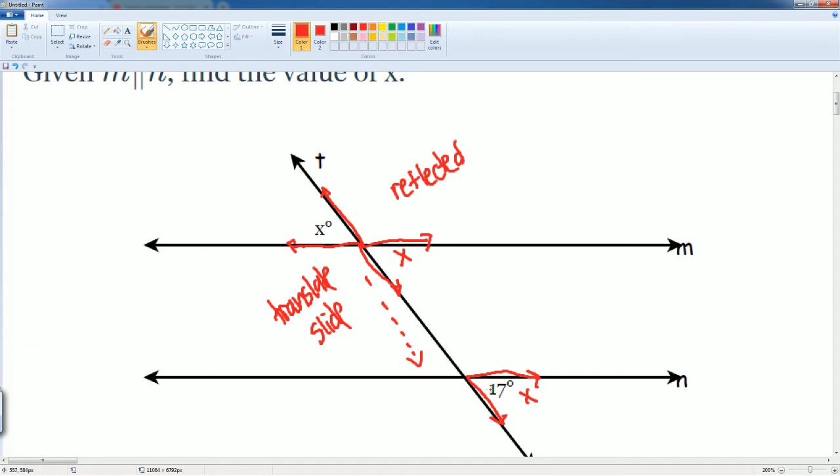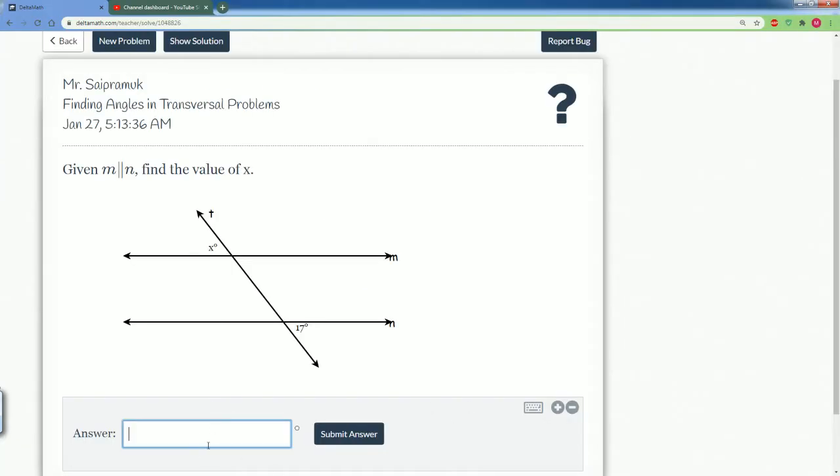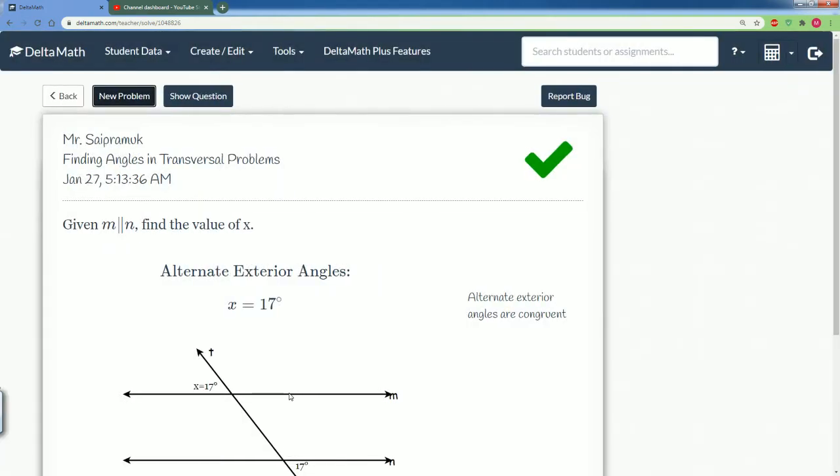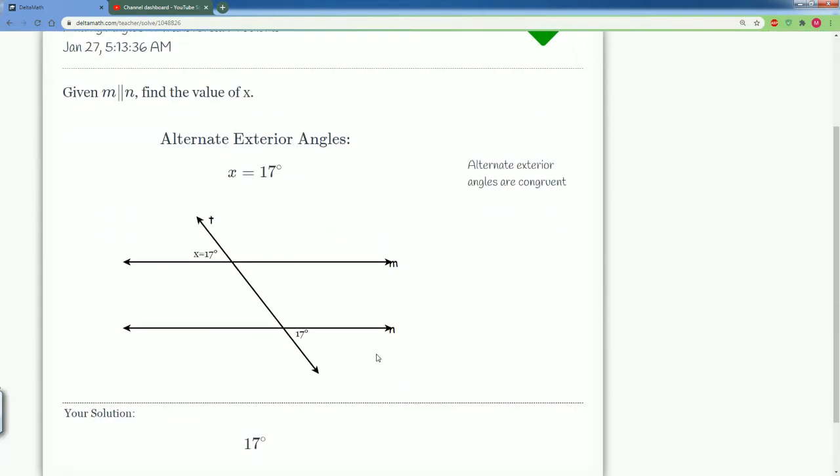We saw that X is the same angle here as this 17, so we can say that this angle is also going to be 17. So X is equal to 17. They're congruent by transformation—we reflect it, then translate it down, so that is correct. We have a name for this one: this is called your alternate exterior angle as well.